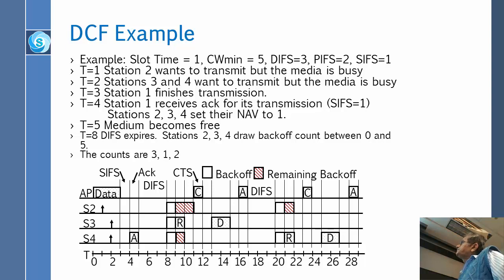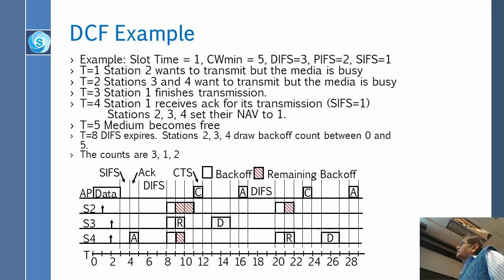They send an RTS. At T=8, the DIFS expires and stations 2 and 3 send an RTS, but they collide. After the collision, they draw a random number between 0 and 5. Why between 0 and 5? Because CW min is 5.